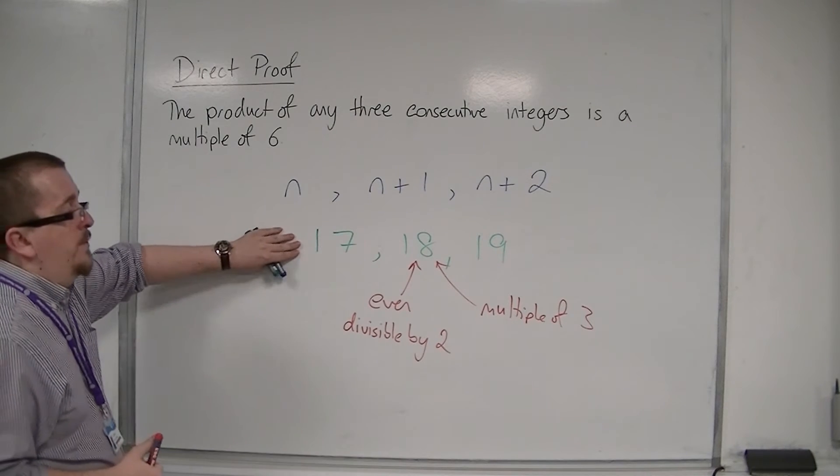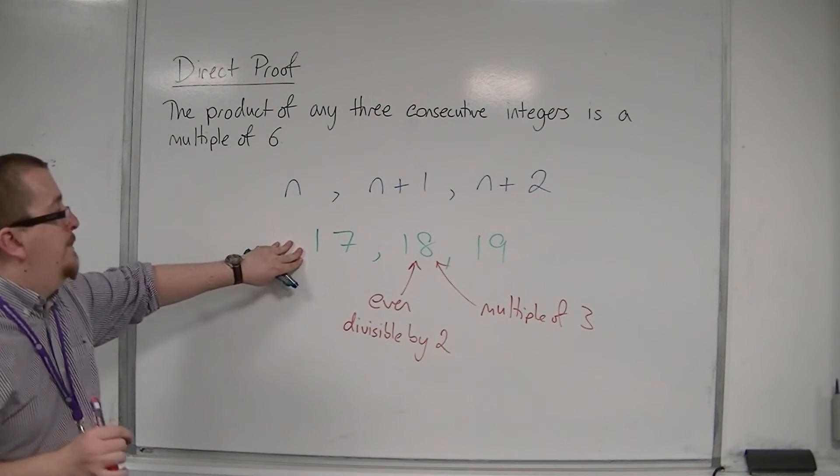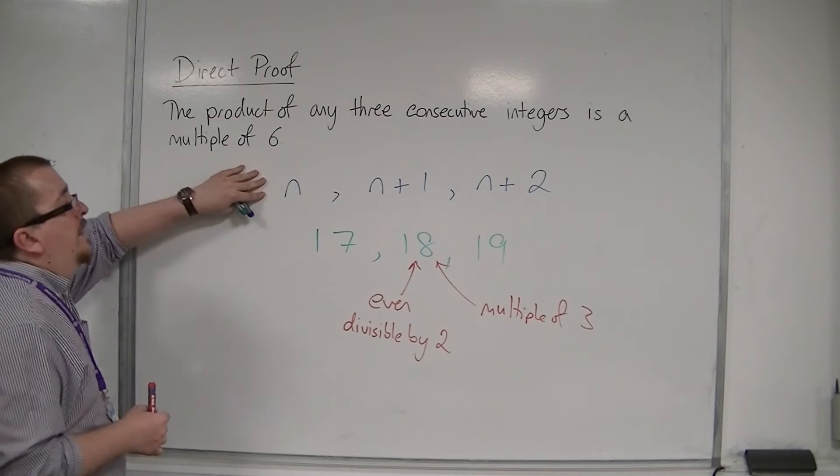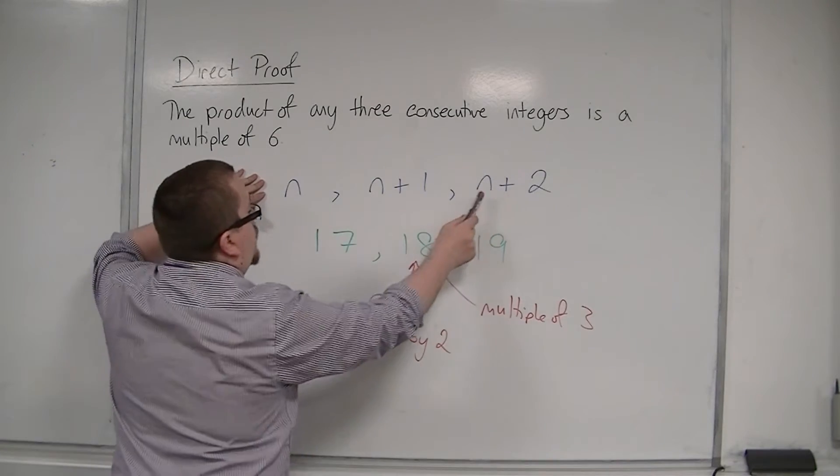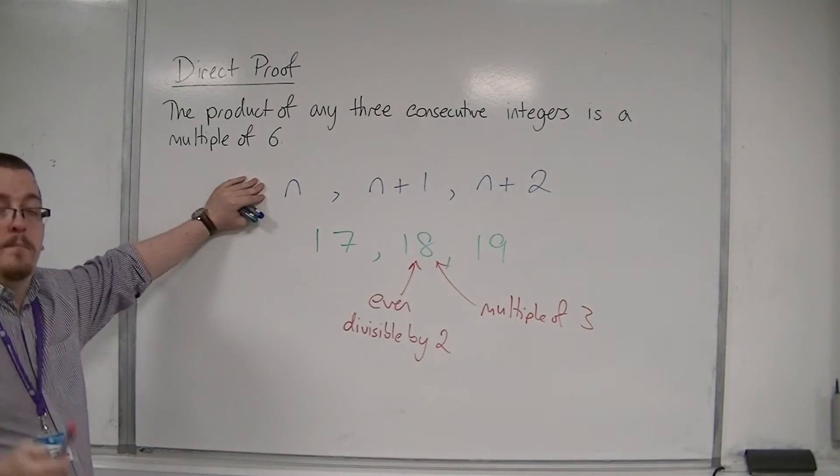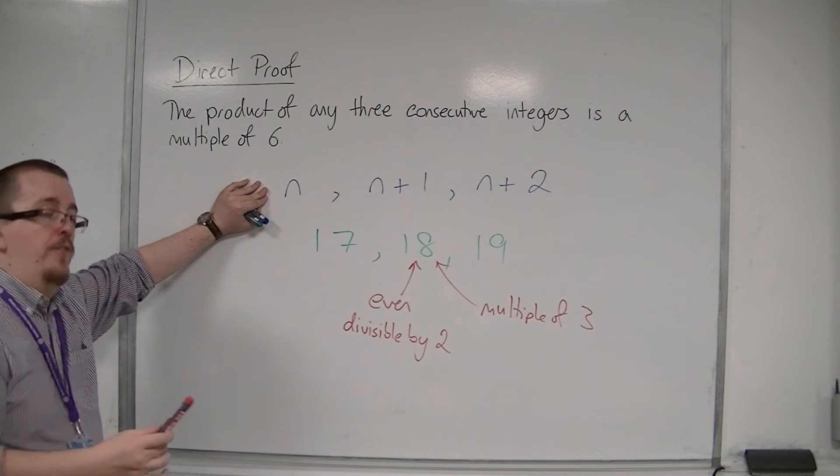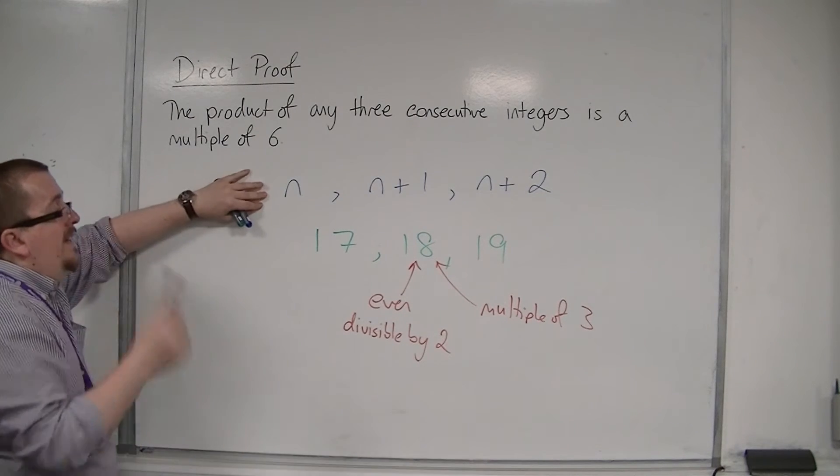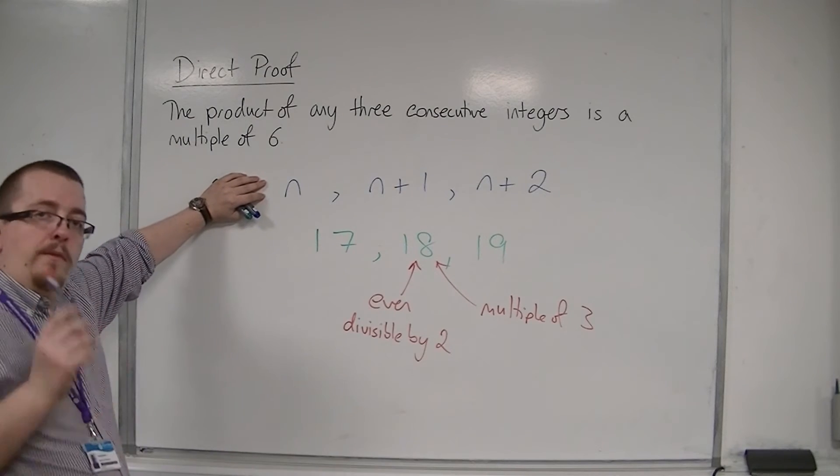So, regardless of the fact that we've got just a specific case there, in general, if these are my three consecutive integers, at least one of them must be divisible by two, because at least one of them will be even. And at least one of them will be a multiple of three.